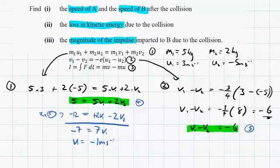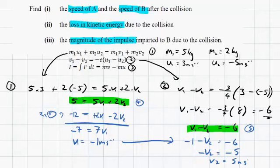Now subbing this back into equation 5, we get minus 1 minus v2 equals 6. Bring over the minus 1, or add 1 to both sides, will give us minus v2 equals 7.